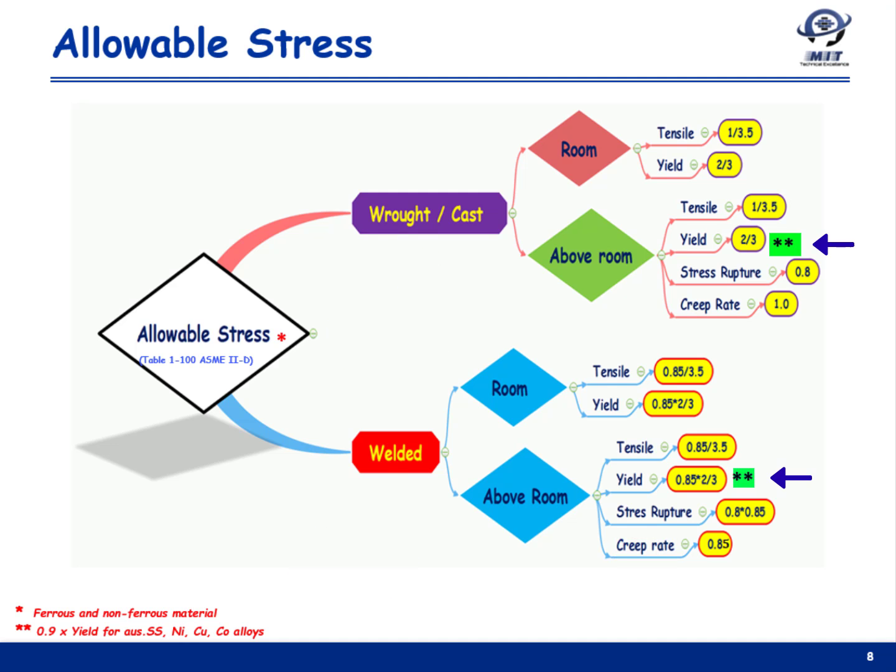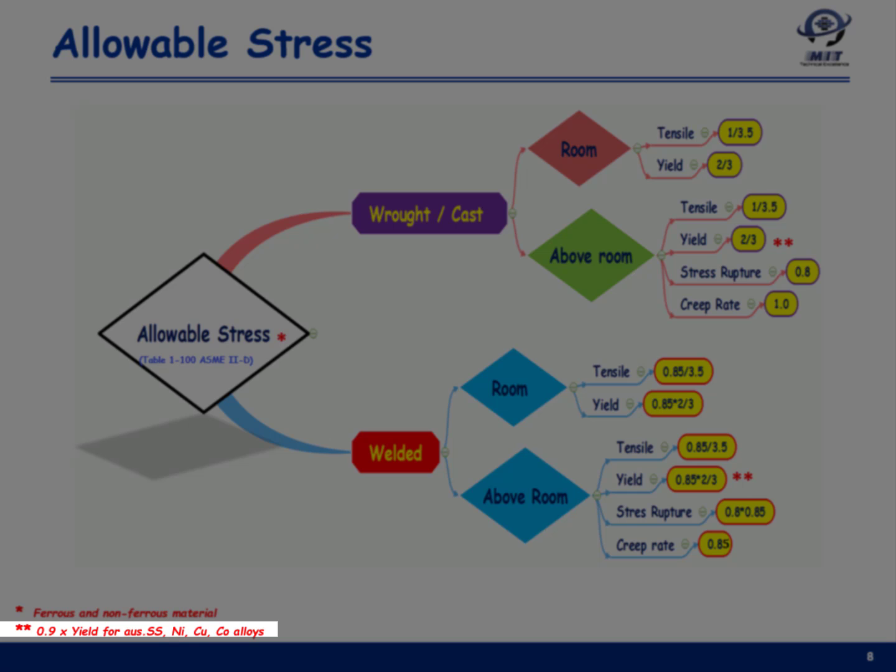In certain cases for austenitic stainless steel and nickel-copper and cobalt alloys, a higher yield is permitted above room temperature, and so the factor of 2/3 may be replaced by a value of 0.9.